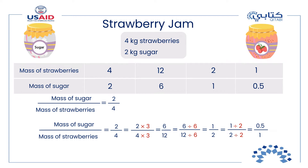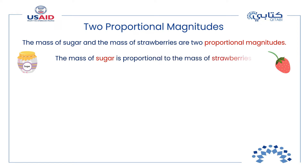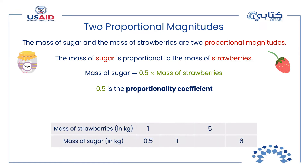For one kilogram of strawberries, 0.5 kilograms of sugar are needed. Therefore, the mass of sugar equals 0.5 times the mass of strawberries. The quotients of the mass of sugar divided by that of strawberries are all equal to 0.5. We say that the mass of sugar and the mass of strawberries are two proportional magnitudes. This means that whenever we have the mass of strawberries, we can find the mass of sugar by multiplying by 0.5 — the proportionality coefficient.